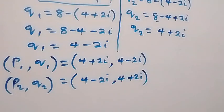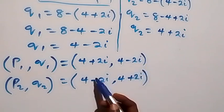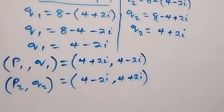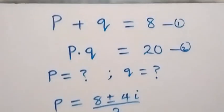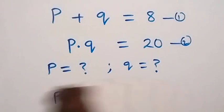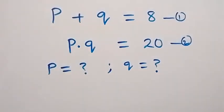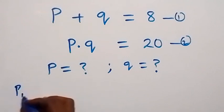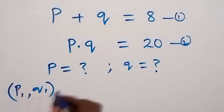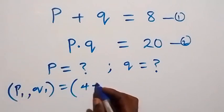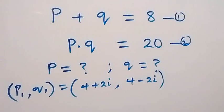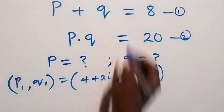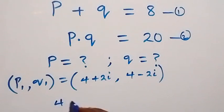We can observe that p1 is the same as q2, and q1 is the same as p2, showing the symmetry of the solutions. Now let's verify by checking if the first solution set (p1, q1) = (4 + 2i, 4 − 2i) satisfies the original equations. If this set is satisfied, the other will be as well. Substituting into equation 1: (4 + 2i) + (4 − 2i) equals 8.